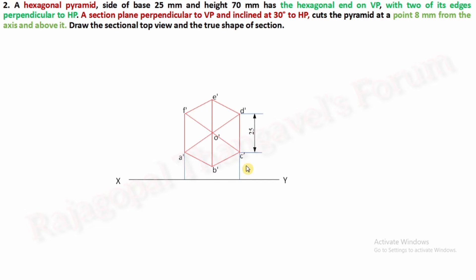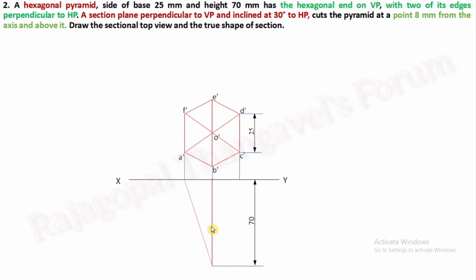This is the front view of the solid. Extend the projectors from all the corners. The axis height is 70 mm. The slant edges exactly on the axis are drawn as continuous thick lines. Complete your top view — from the top, f', e', d' (meaning f, e, d) will be visible, while a, b, c is invisible from the top, so a, b, c must be inside brackets.